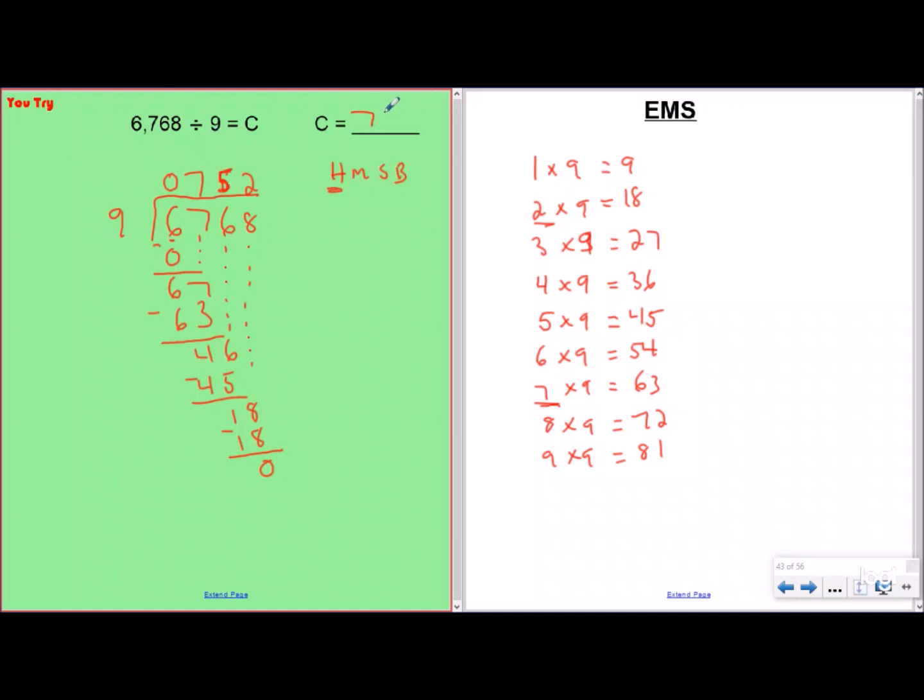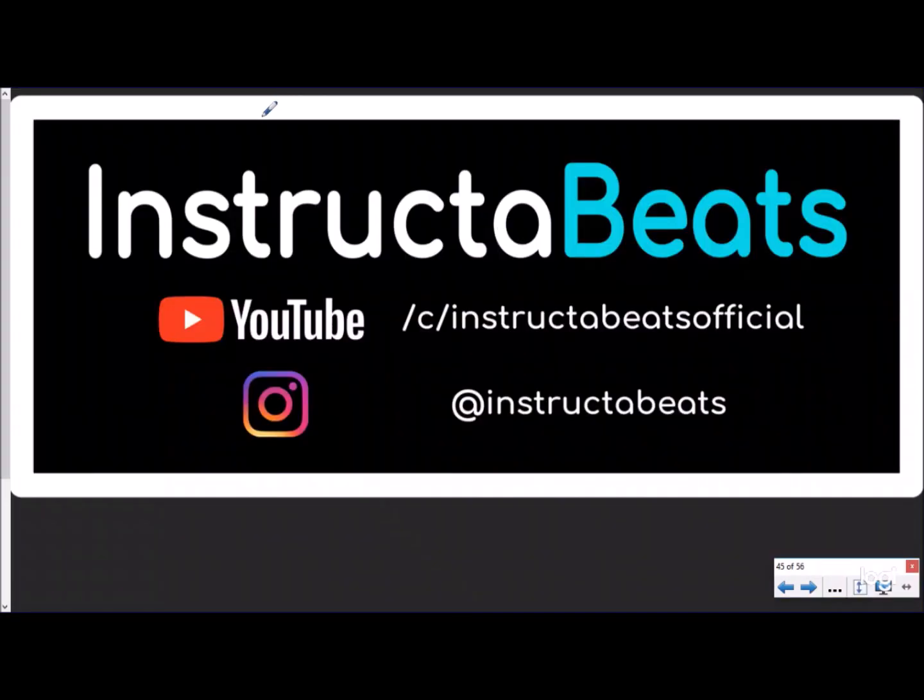C equals 752. So if your dividend is 6,768, your divisor is nine, your quotient will be 752. So as always, please check us out on YouTube at Instructor Beats Official. We have an awesome standard algorithm division song we'd love for you to check out. You can follow us on Instagram at Instructor Beats. Feel free to continue with our division playlist or check out any of our other resources. Thanks for watching. Instructor Beats out.